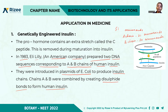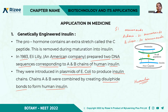The insulin produced by this genetic engineering is called Humulin.